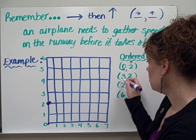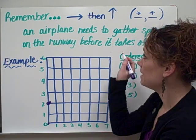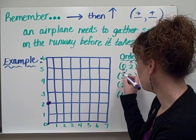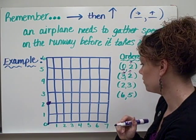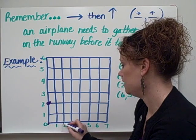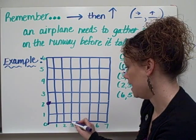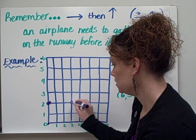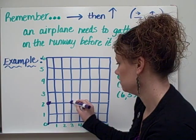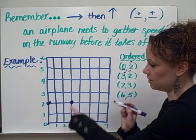Let's try the next one, 3, 2. So using my same example of going horizontally first and then up vertically, I'm going to go over 1, 2, 3 and up 1, 2. So this would be what 3, 2 would look like on a coordinate grid.